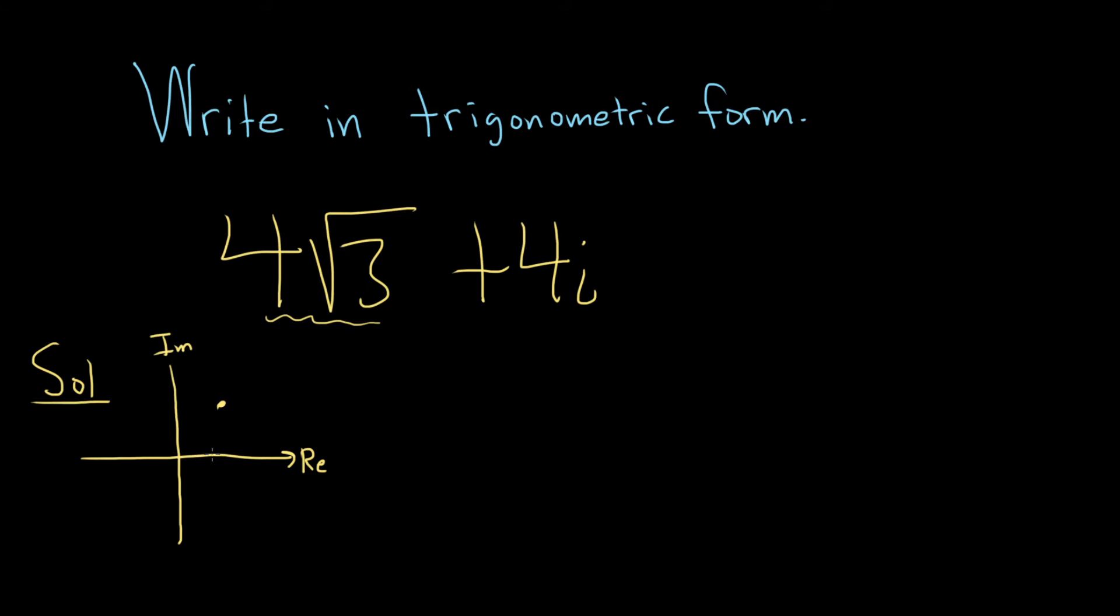We'll travel this way by 4 square root of 3, and then travel up by 4, and that should put the complex number somewhere here. So we'll be looking for an angle, which we'll call theta in a minute, and that's the angle we'll be looking for.